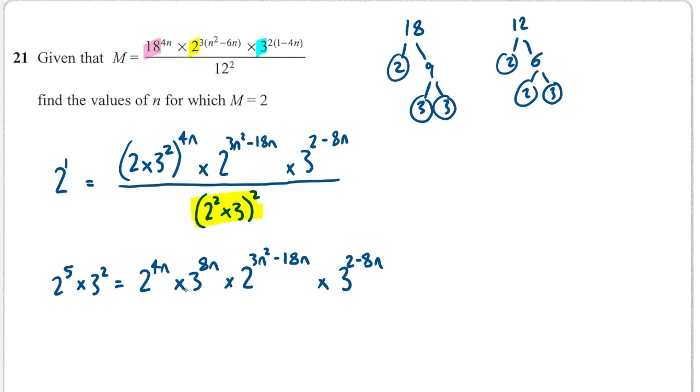Okay. And now what I can do is I can simplify the 2s on this side, collect those, and the 3s on this side, collect those. So what is that going to give us? Let's just write this out again. And let's look at the 2s. When I'm multiplying these 2s together, the powers add. So I'm going to get 2 to the 3n squared, and then 4n minus 18n is minus 14n. And the 3s, again, when I'm multiplying the powers add. So I get 8n plus 2 minus 8n. So that's just plus 2. So it's just 3 squared.